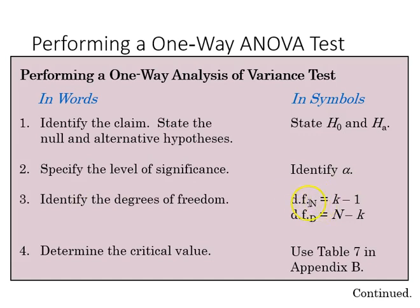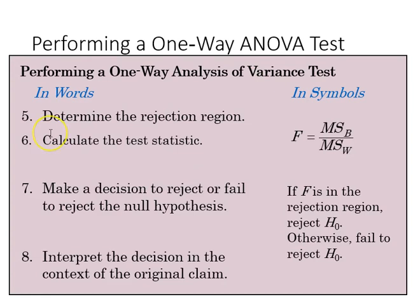Recall here that the degrees of freedom in the numerator is k minus 1, and in the denominator capital N minus k. We determine the critical value from our F distribution table, and with that information we can determine our rejection region.